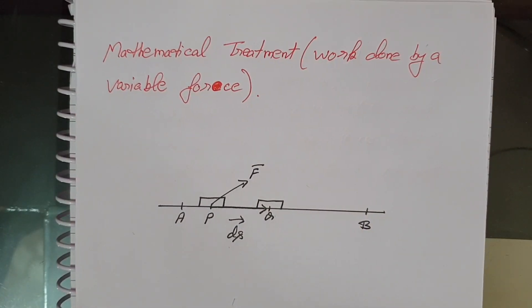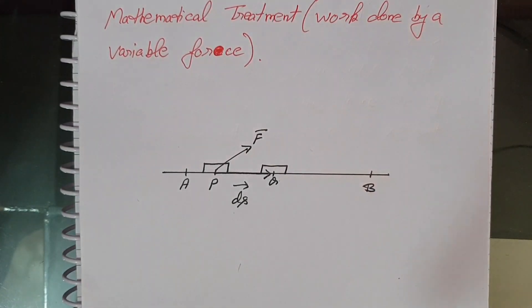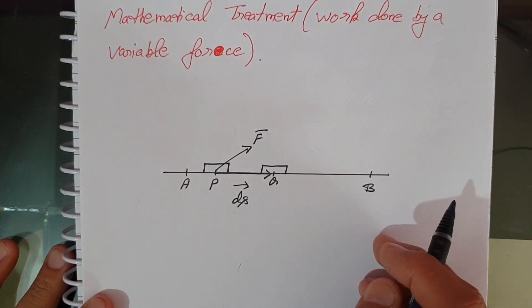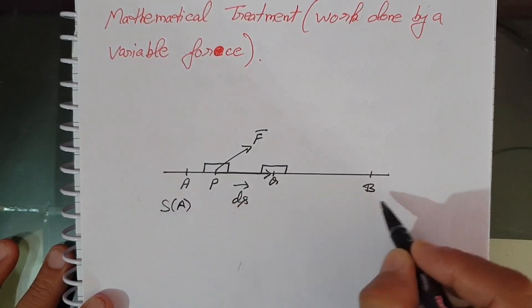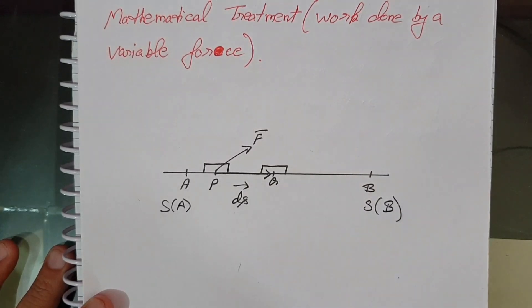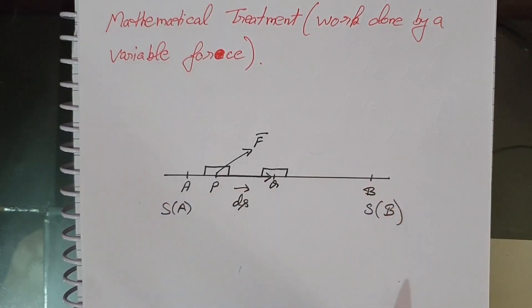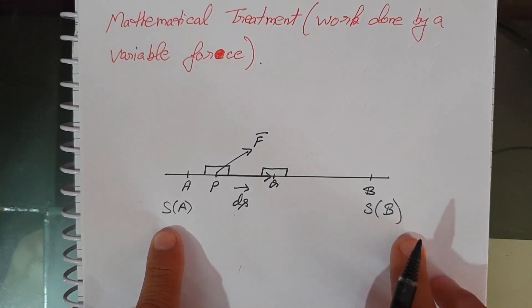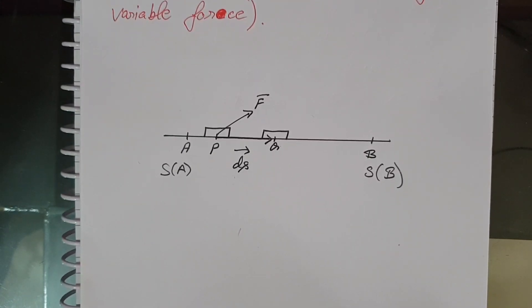Here is the mathematical treatment for work done by a variable force. Look at this diagram. Suppose we have to calculate the work done in moving a body from point A to point B. Consider this as S_A and this as S_B, so we calculate the work done from A to B under some variable force. S_A and S_B are the distances of points A and B with respect to some reference point.